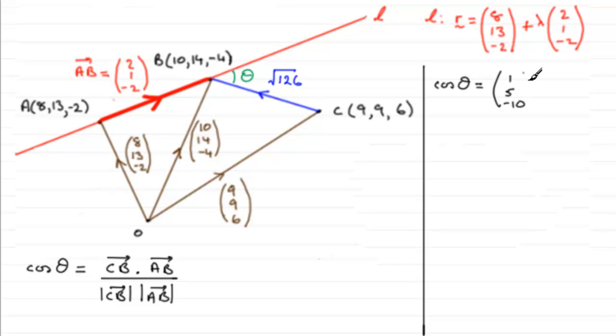So that's the vector C to B. We now want the vector A to B, and we need to dot it with that. A to B, we've got up here, was the vector 2, 1, minus 2.